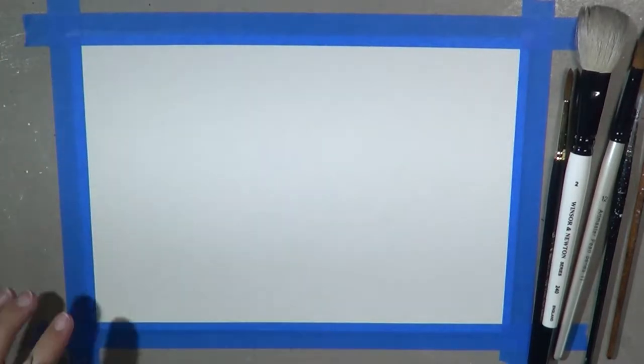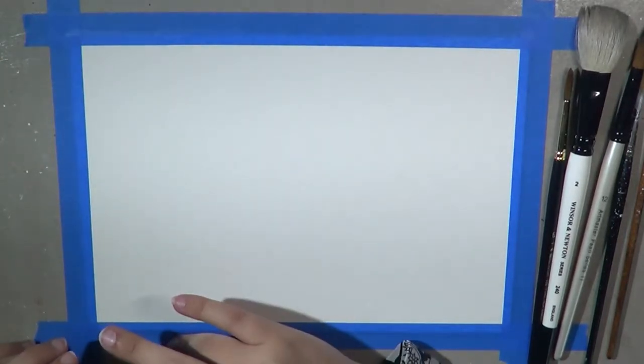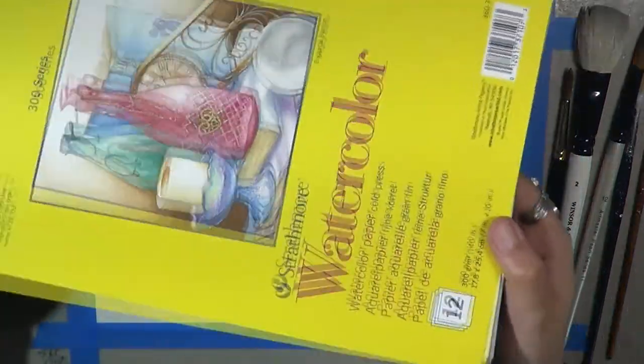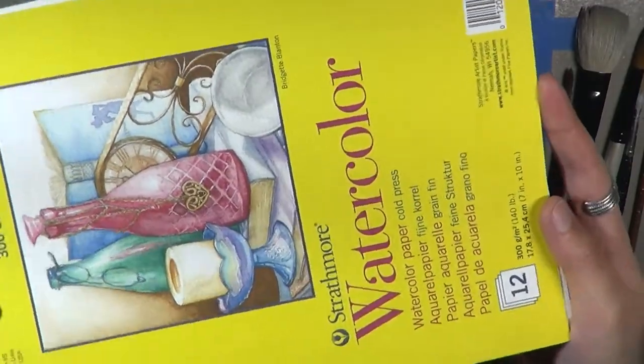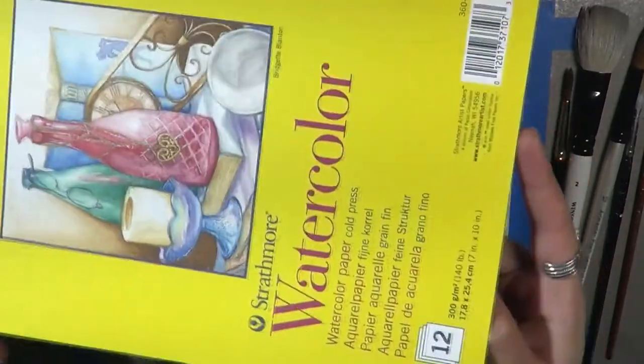We are going to make an abstract type of galaxy painting. For that you're going to use watercolor paper. I am just using this Strathmore 300 series cold press. It has texture on it and I already taped it down to my little board.